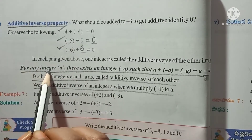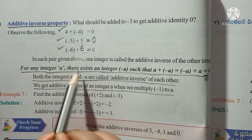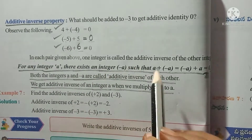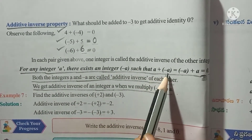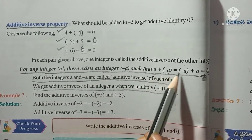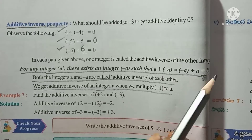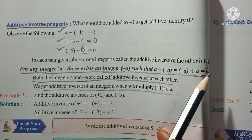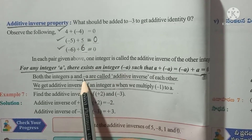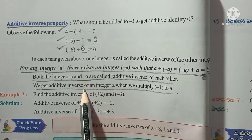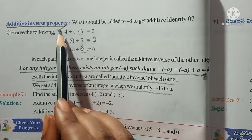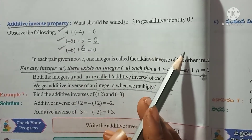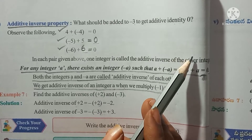For any integer a, there exists an integer minus a such that a plus (-a) is equal to (-a) plus a, which is equal to 0. Write this definition, then write the two key statements, and then the three examples.